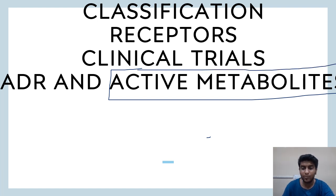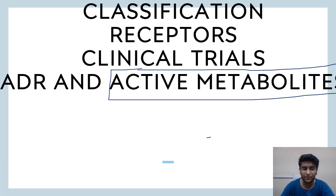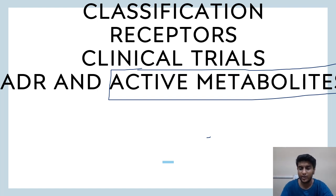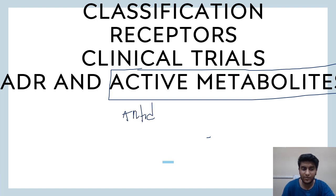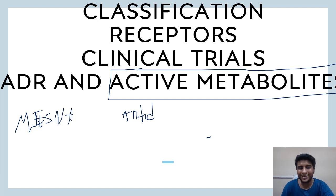Know active metabolites — spironolactone to prednisolone; digitoxin — and pro-drugs. For example, sulfasalazine is cleaved to 5-aminosalicylic acid and sulfapyridine. Certain drugs also produce toxic metabolites — like cyclophosphamide producing acrolein — so you should know the antidotes as well. Mesna is one very important antidote — it is the most frequently asked antidote.